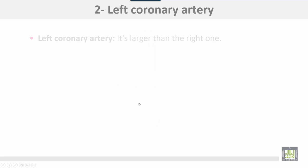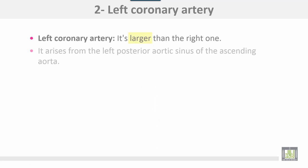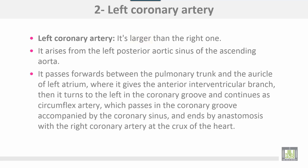The left coronary artery is larger than the right one. It arises from the left posterior aortic sinus of the ascending aorta and passes forward between the pulmonary trunk and the auricle of the left atrium, where it gives the anterior interventricular branch.